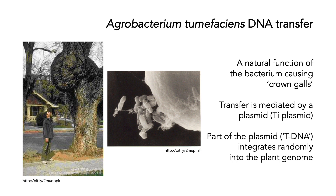Agrobacterium tumefaciens is a bacterium that allows DNA transfer — a natural function of the bacterium. It causes things called crown galls, which you will often see on trees. The transfer of DNA is mediated by a plasmid called the Ti plasmid. At least part of it, called the T-DNA, integrates randomly into the plant genome. This is slightly different from what we talked about last time: bacterial plasmids do not integrate into the bacterial chromosome, but in this case, the T-DNA does integrate randomly into the plant chromosomes.